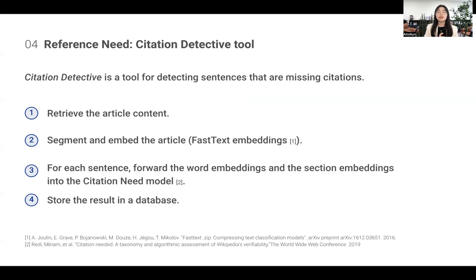For the first metric, we provide a Citation Detective tool that is based on the previously published work that introduces the citation need model. The way it works: it retrieves the article content, then segments and embeds the article. After that, it forwards the word embeddings and the section embeddings into the citation need model. This citation need model gives us a label for each sentence, whether it needs or does not need a citation. Finally, the result is stored in a database.